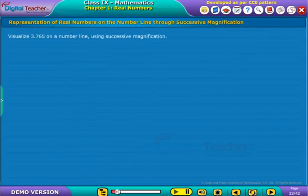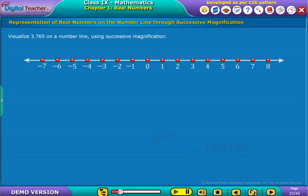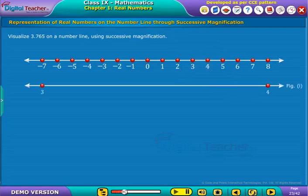Visualize 3.765 on a number line using successive magnification. We know that 3.765 lies between the interval 3 and 4. To have a rough idea for locating it on a number line,